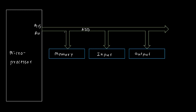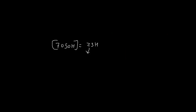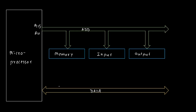Now let's understand the data bus. The microprocessor not only sends data to memory but also has the capacity to receive data, which is why the data bus is bidirectional. For example, on address 7050H the data is 23H. 23H can be written as 0010 0011, which is 8 bits. That's why we require 8 wires to send or receive data, so the data bus runs from D0 to D7.